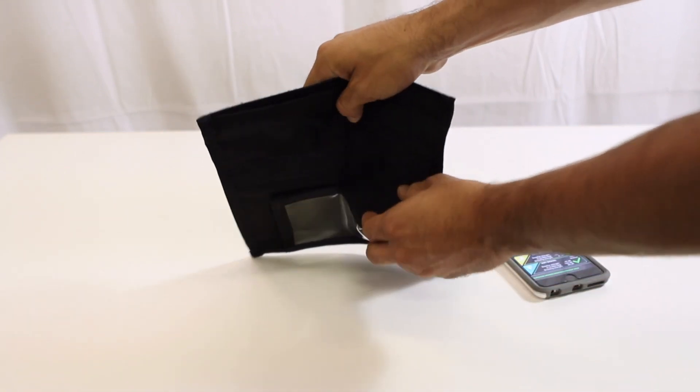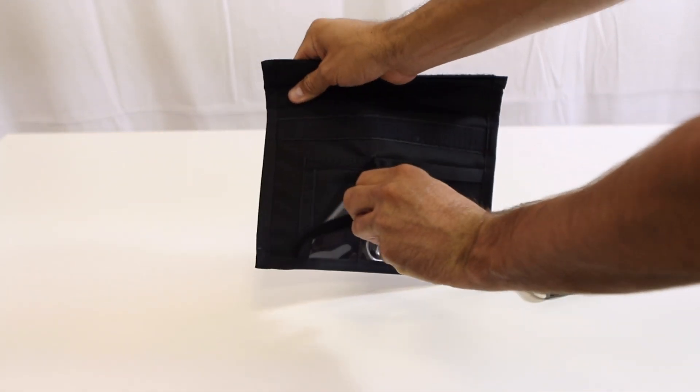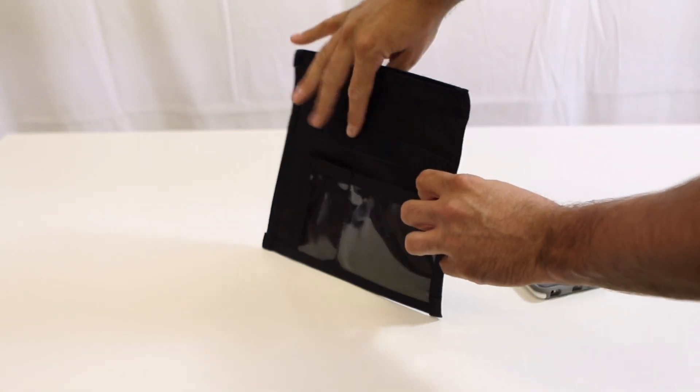On the back side of the bag, we have a pocket for an evidence card and a closable pocket here for a business card or anything else you'd like to put in there.